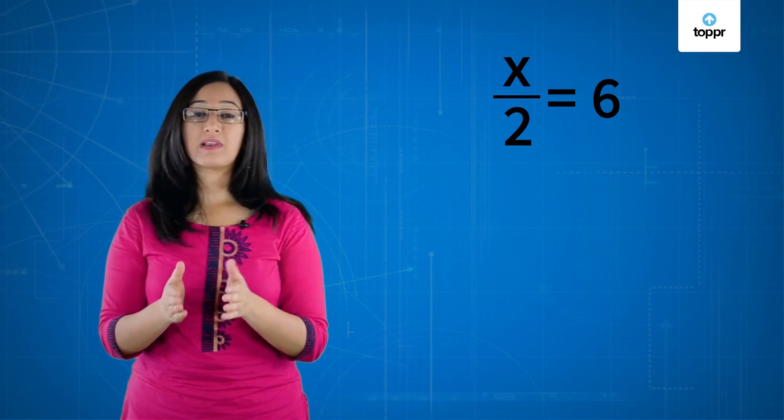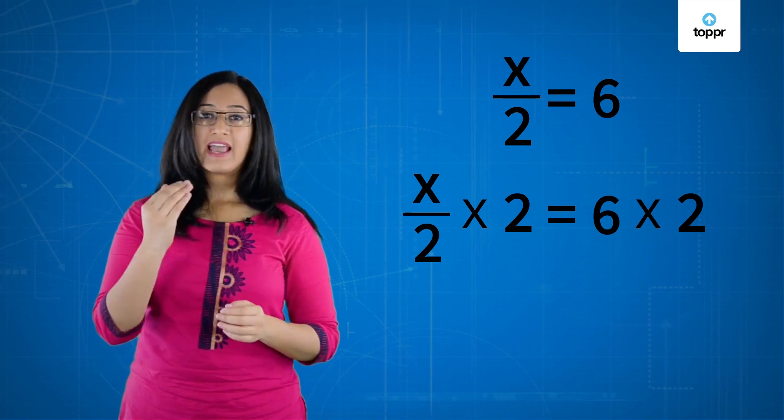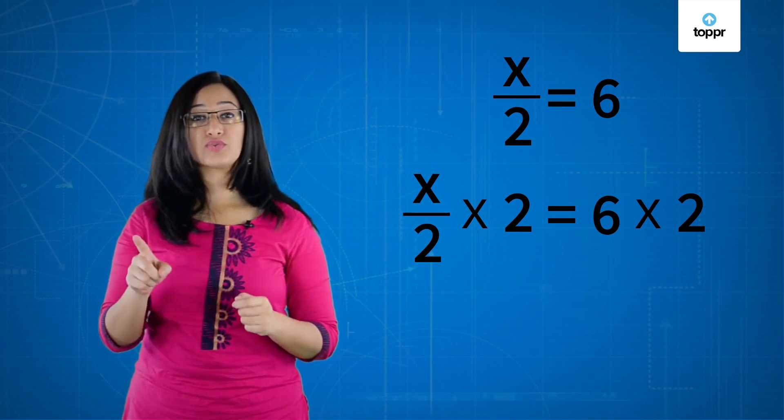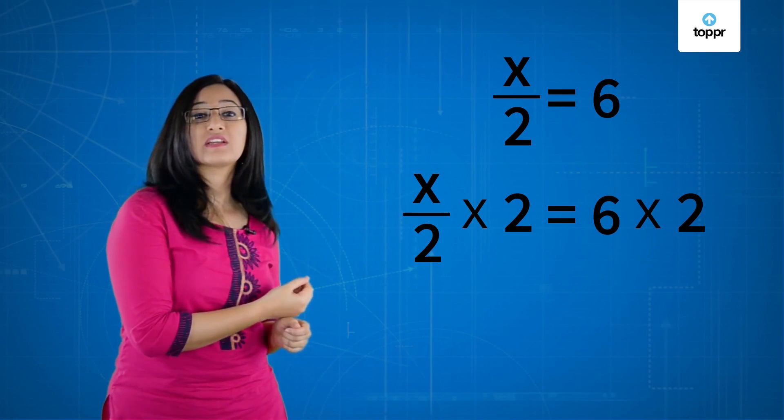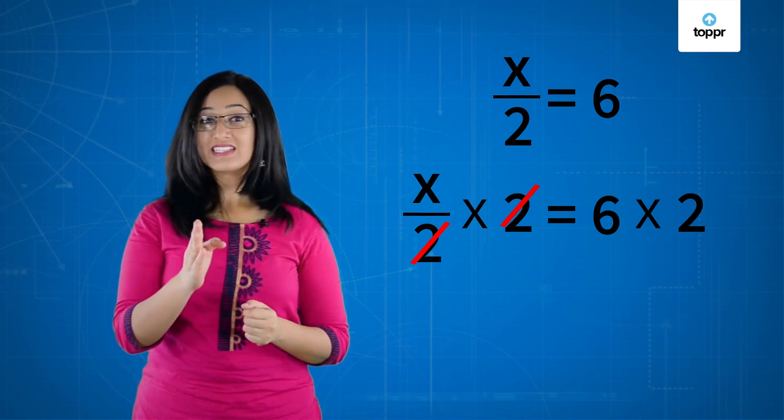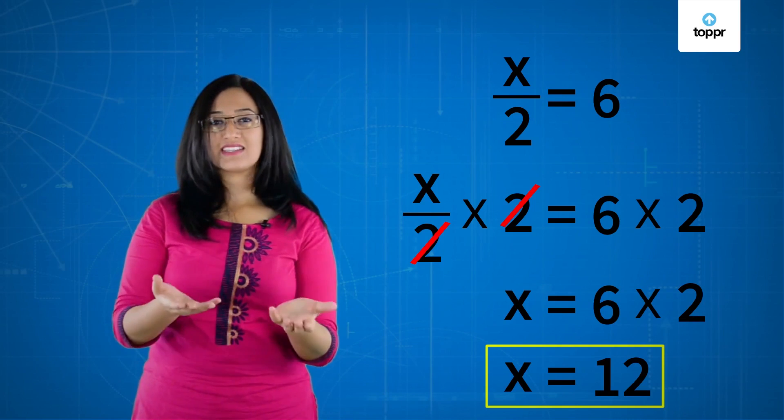So, instead we multiply both the sides with 2 and this gives us the equation x by 2 into 2 is equal to 6 into 2. The 2 and 2 on the left hand side of the equation can be divided and thus result in the number 1. This leaves us with x is equal to 6 into 2. So, x is equal to 12.